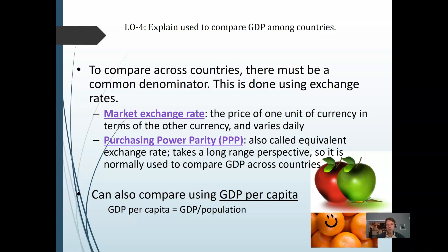We also use something called purchasing power parity — trying to understand what you can actually buy with that money in a particular location. Having visited about 30 of roughly 200 countries in the world, I've been in parts of the world where food is cheaper — having really nice meals for $3 with multiple courses — but electronics might be even more expensive. So we try to understand what you can buy with that money or in that size economy.